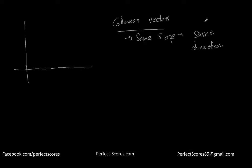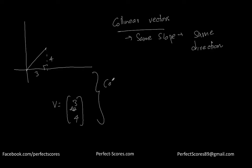Let's say there is a vector (3, 4). So this is how I'm going to draw it, where this is going to be four and this is going to be three. Now if I want to find a collinear vector for it, I talk about the slope of this line. Tangent theta is equal to four over three, so four over three is actually the slope of this line.